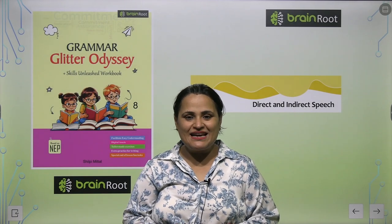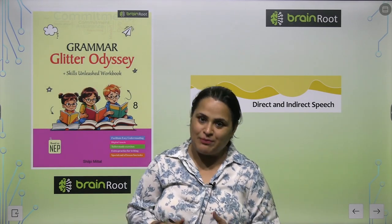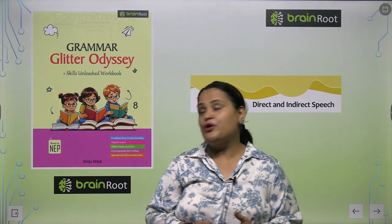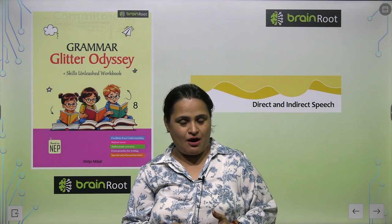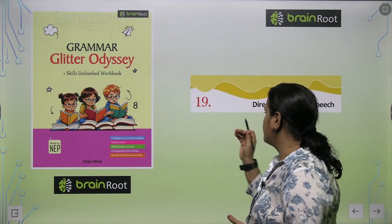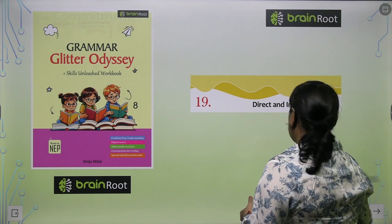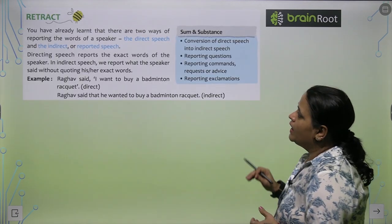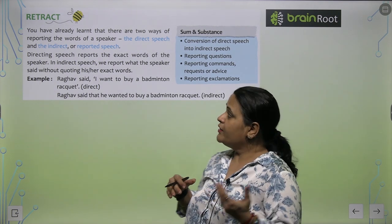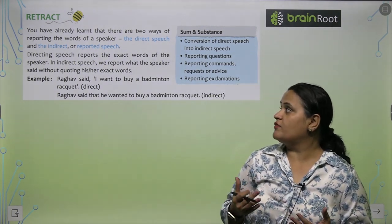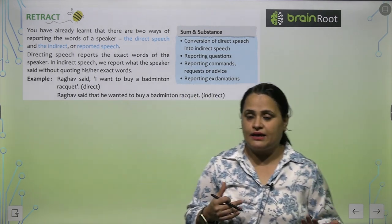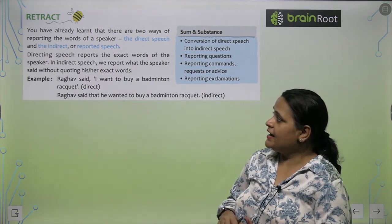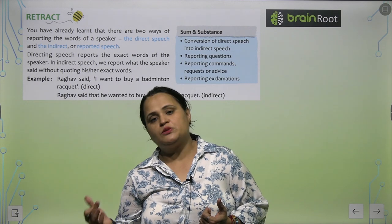Hello children, once again welcome to my grammar class. Today we are going to take Chapter 19 from your book Grammar Glitter Odyssey by Rainrude from Amit Publishing House. The name of Chapter 19 is Direct and Indirect Speech. You have already learned that there are two ways of reporting the words of a speaker: direct speech and indirect or reported speech.